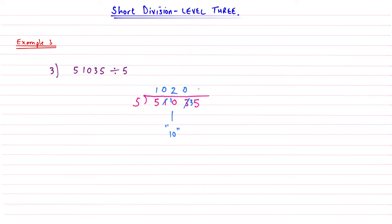So how many fives going into 35? Well that's going to be seven. So fives into 35 goes seven. And so my answer to this division is going to be 10,207.